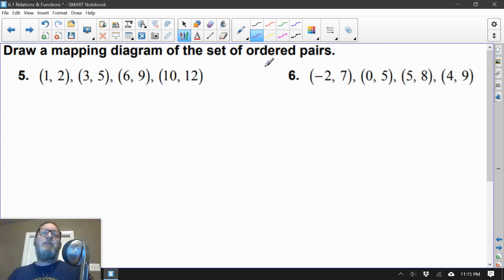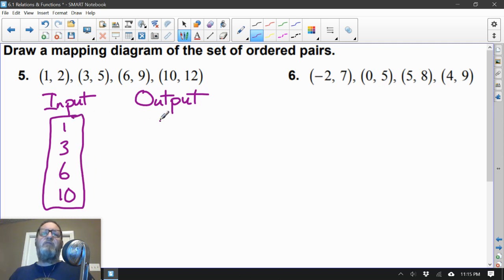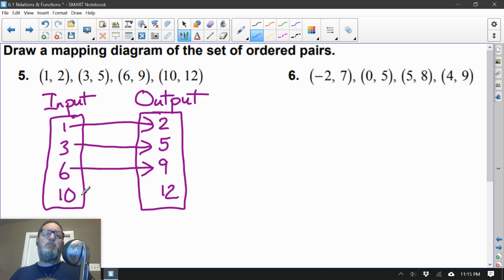Number 5. Draw a mapping diagram of the set of ordered pairs. Remember how that looks? It's an input and we have an output. Our inputs are the x values, so we have 1, 3, 6, 10. Got them in order. And here we have 2, 5, 9, and 12. So the 1 went with the 2, the 3 goes with the 5, 6 pairs up with 9, and finally 10 pairs up with 12. There we go.